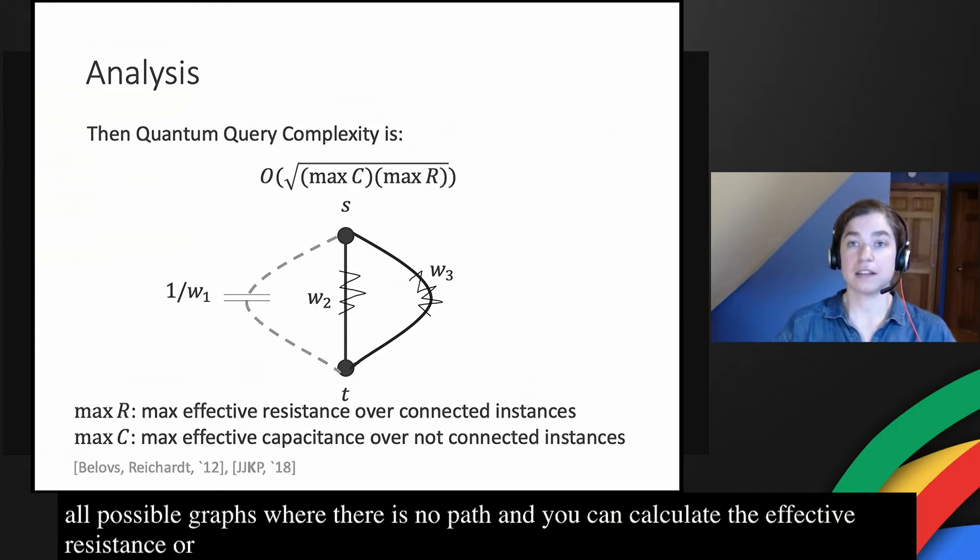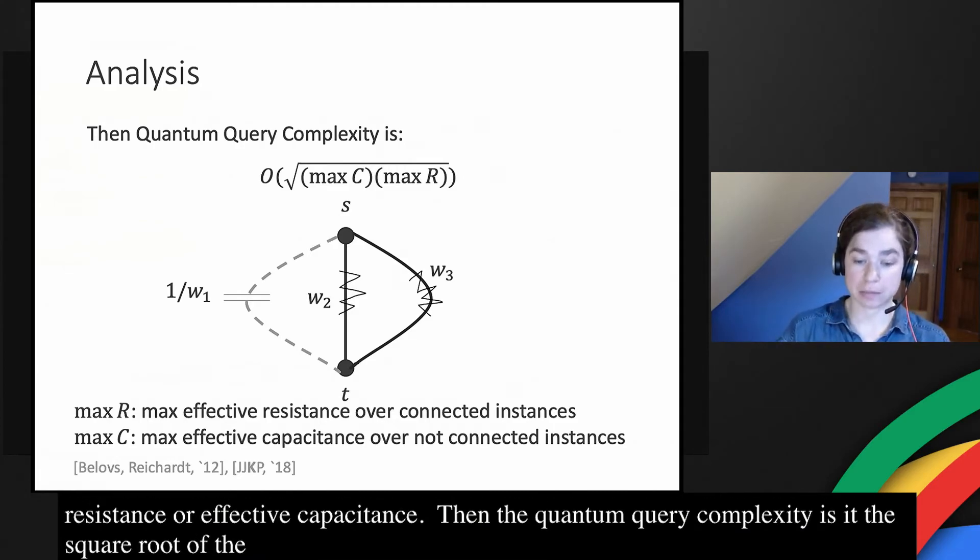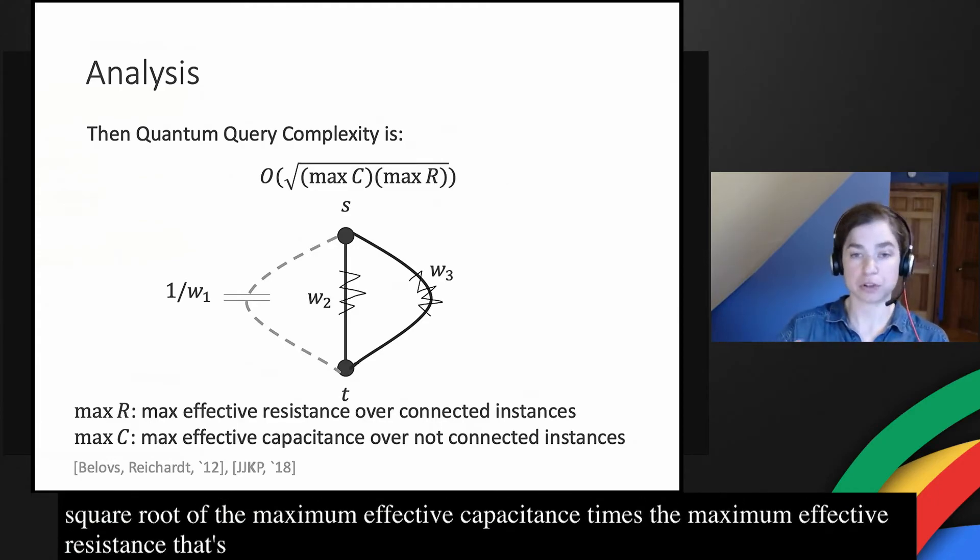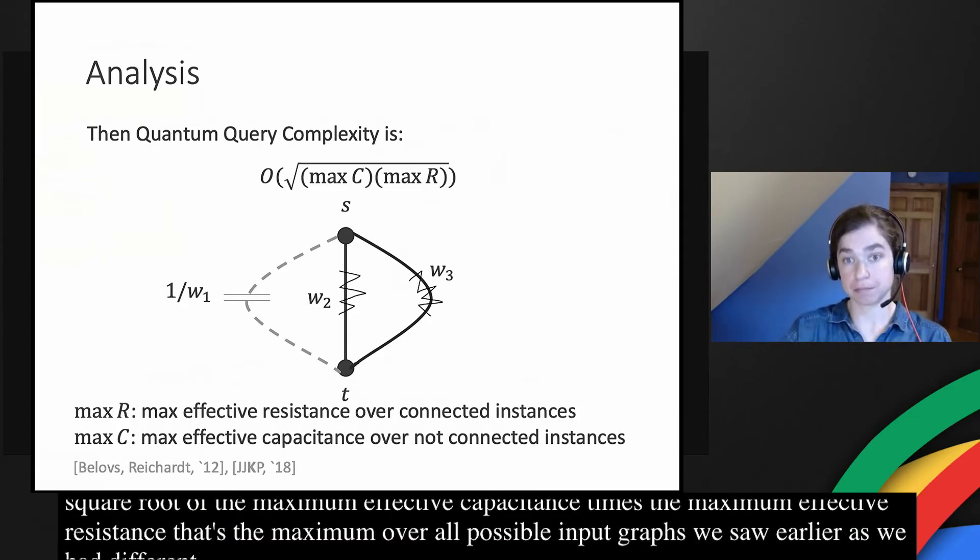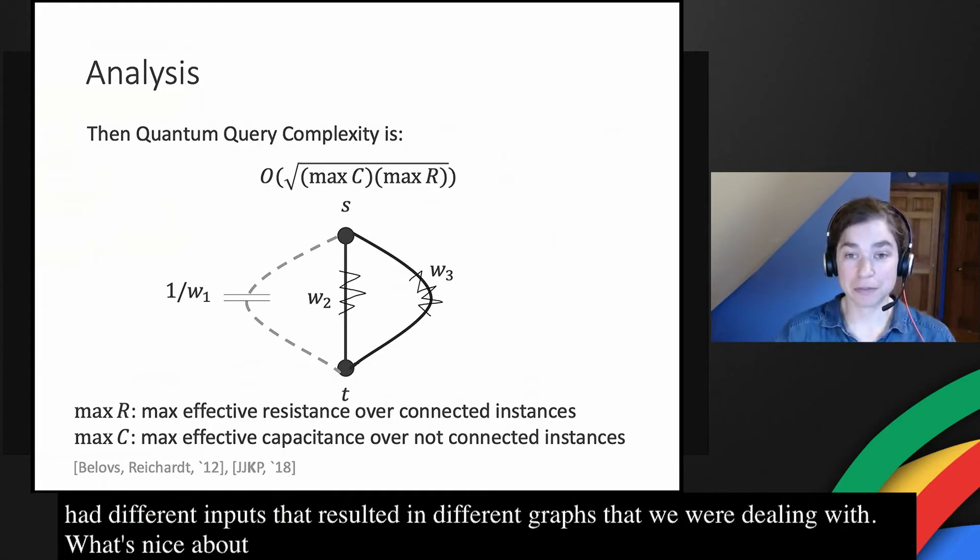Then the quantum query complexity, so how well a quantum algorithm would do in solving this problem is just the square root of the maximum effective capacitance times the maximum effective resistance. And that's the maximum over all possible input graphs. We saw earlier that as we had different inputs that resulted in different graphs that we were dealing with.